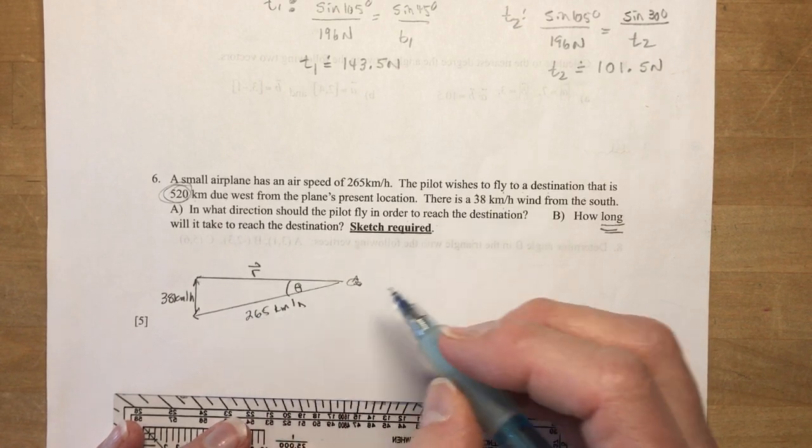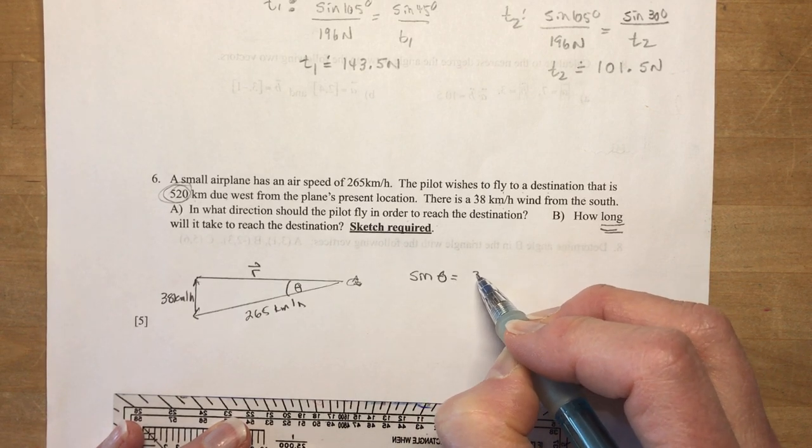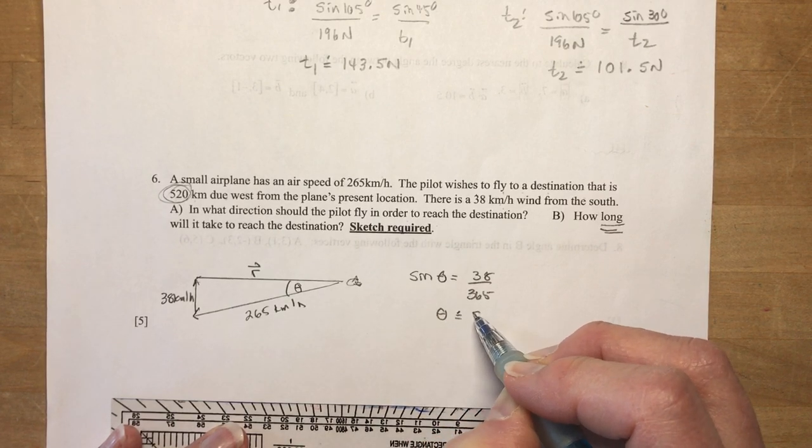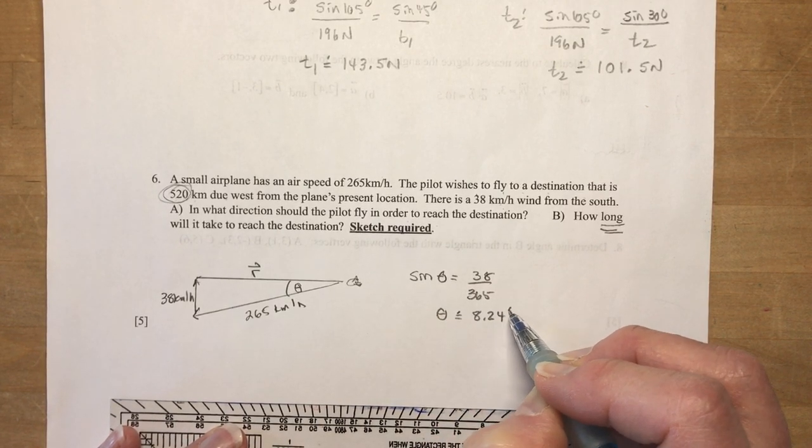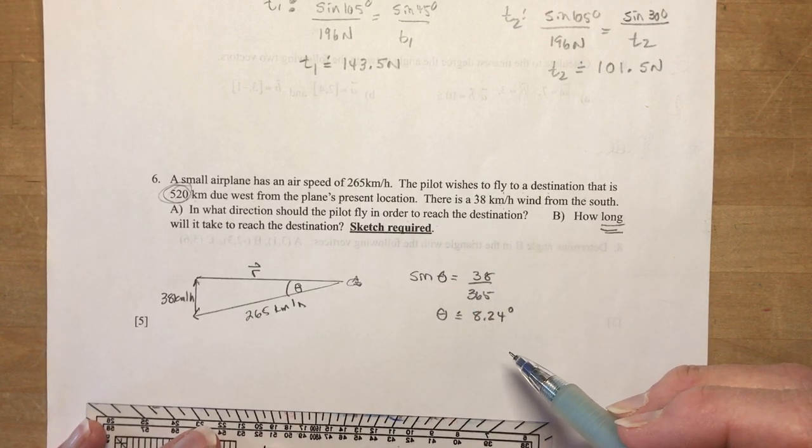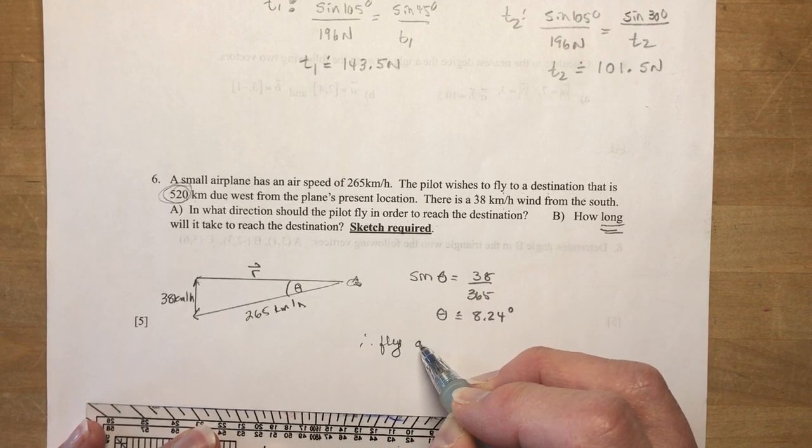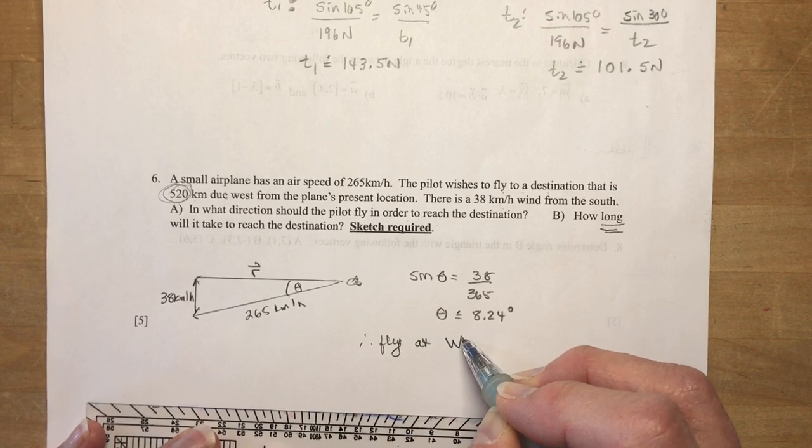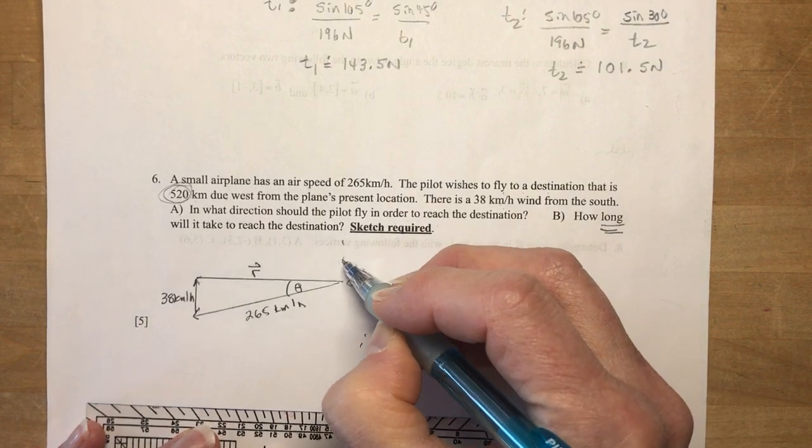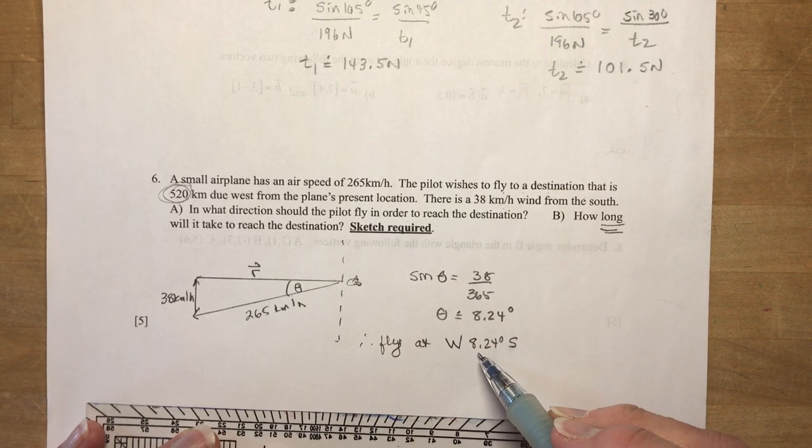Okay, so now what I need to do is figure out, it says in what direction should the pilot fly in order to reach the destination. So I want this angle in here. And that's a simple sine theta calculation. Sine theta equals 38 over 365. And theta is approximately equal to 8.24 degrees. I didn't see how many decimals, but usually two is sufficient. So that means he needs to fly at west 8.24 degrees south. So here's my north, south, east, west. So west, south, west 8.24 degrees south.